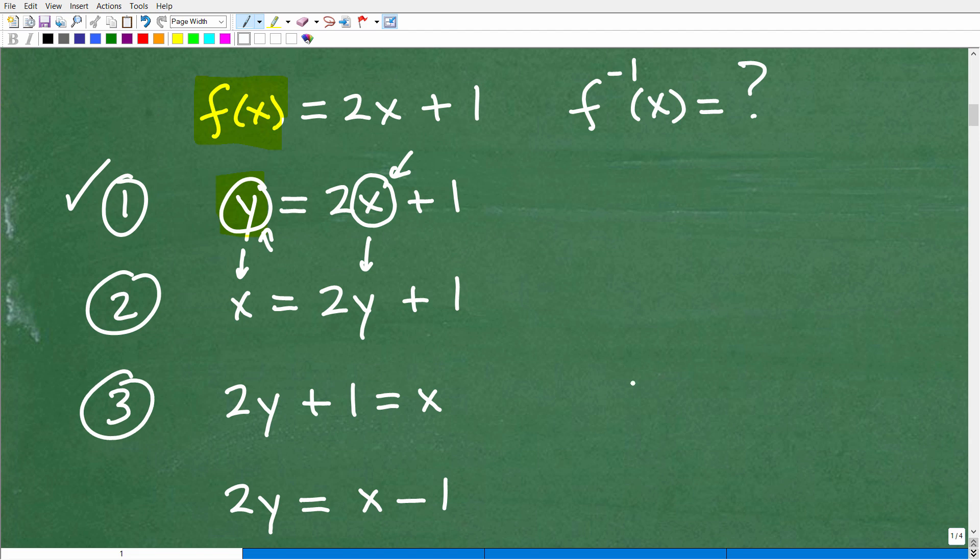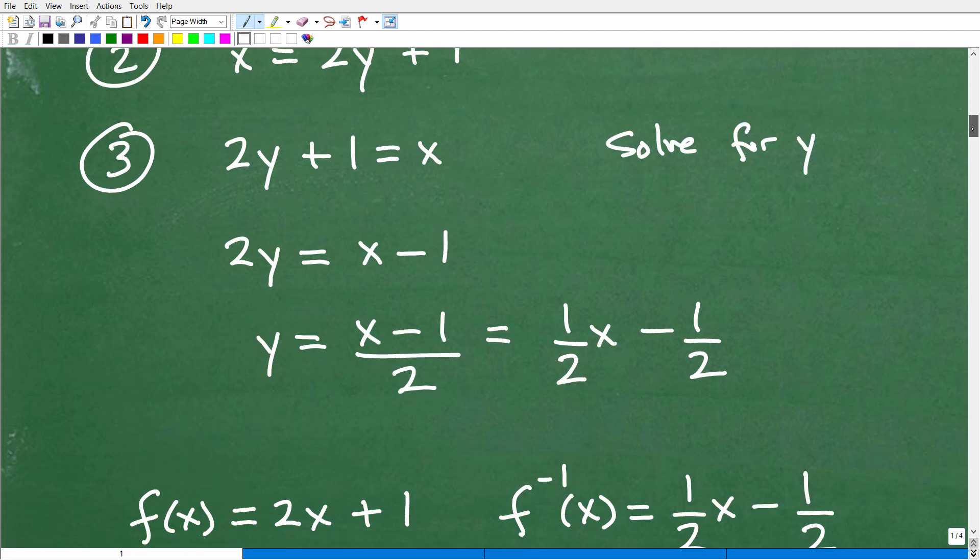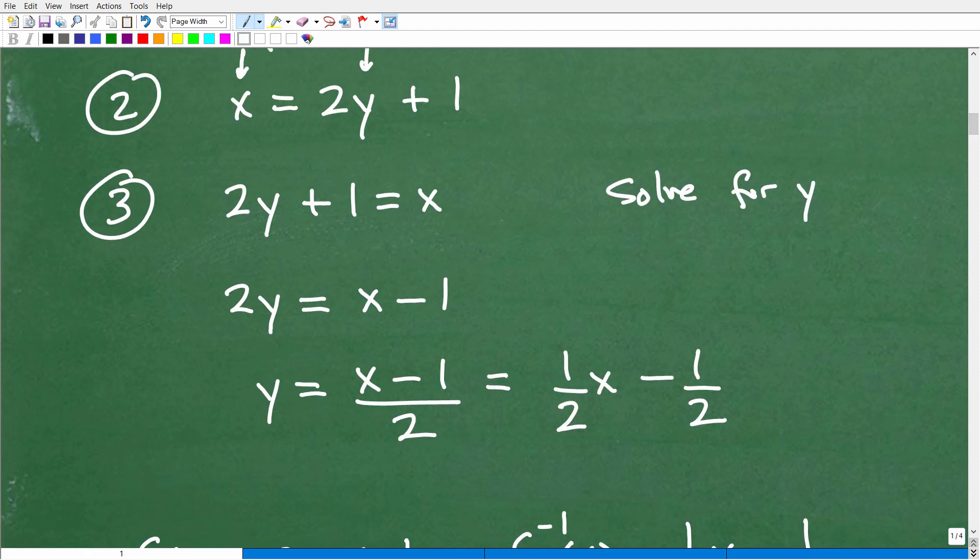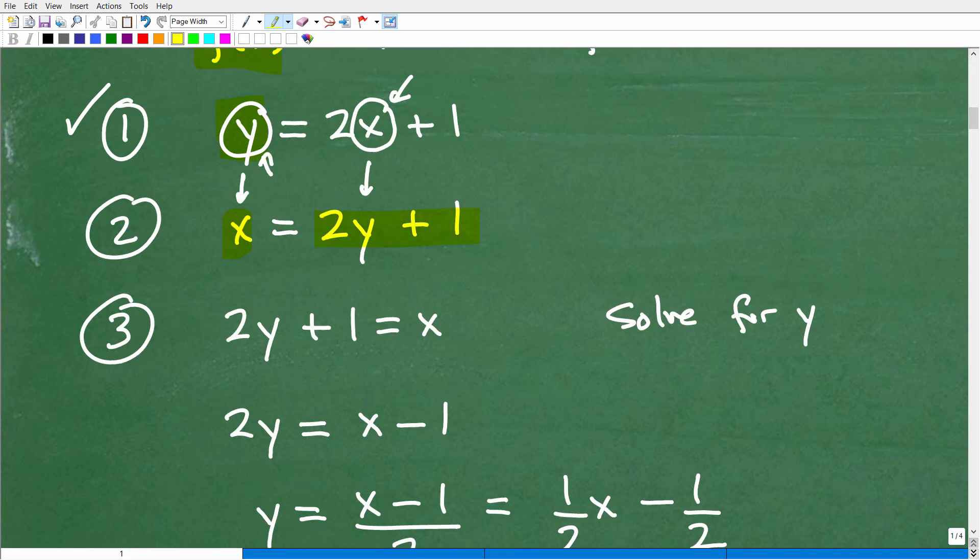So right down there, that becomes an x. And right down here, this becomes a y. Now step number three is we're going to solve for y. So let's go ahead and do that now. So here I have x is equal to 2y plus 1. Let me go back up here. This is after we switch things out. So x is equal to 2y plus 1. I'm going to solve for y. So I'm going to rewrite this as 2y plus 1 is equal to x.